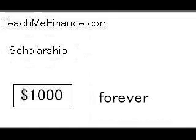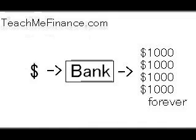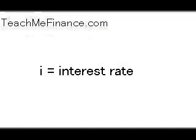Now in order to do this, you have to put some money into the bank initially. The question is, how much money do you have to put in initially so that there is $1,000 coming out in interest every year? Well, in order to do this, you have to guess an interest rate — the interest rate that the bank is going to be paying from now until the end of time. Now actually, this is impossible to know; we don't know what's going to happen in the future, so you just have to guess an interest rate.